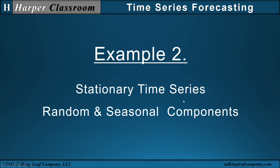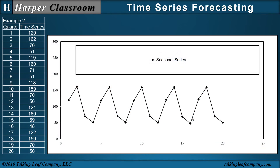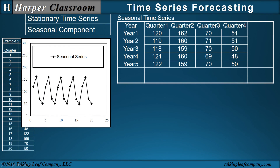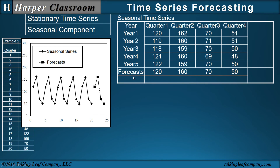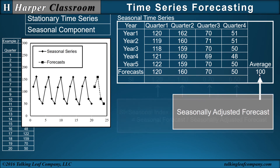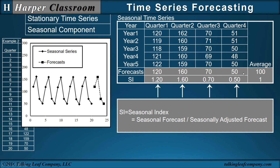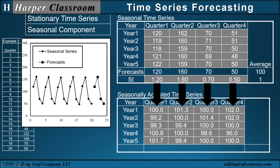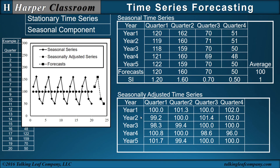Let's look at example two: a stationary time series with random and seasonal components. The procedure is very similar — we plot the time series and see it's stationary with a seasonal component. Because of the seasonal component we block it, but because it's stationary we don't take the slope; we take the average. These averages become the forecasts for the next year. We can plot the forecasts, then take the average of the seasonal forecasts to get the seasonally adjusted forecast. Dividing the seasonal forecast by the seasonally adjusted forecast gives the seasonal indexes. We can then divide the seasonal time series by the seasonal indexes to get the seasonally adjusted time series.